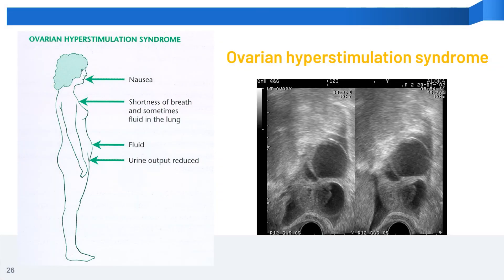The ovaries are much enlarged in ovarian hyperstimulation syndrome. The symptoms and signs to look out for include nausea, shortness of breath — sometimes because of fluid in the lungs — fluid in the abdomen, as well as reduced urine output. If these situations are encountered, you must seek medical attention immediately.